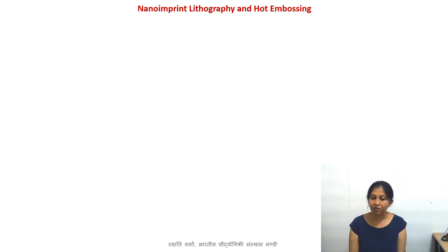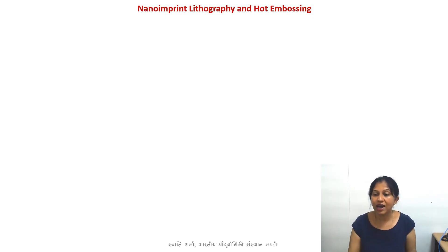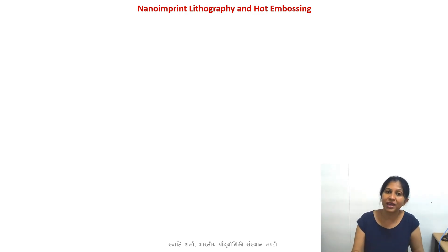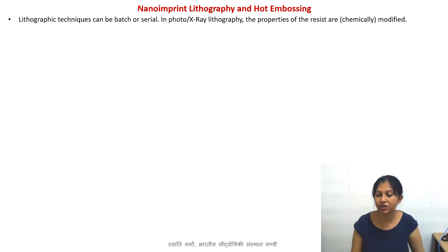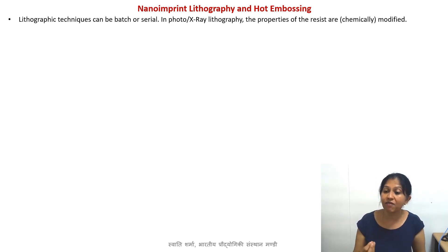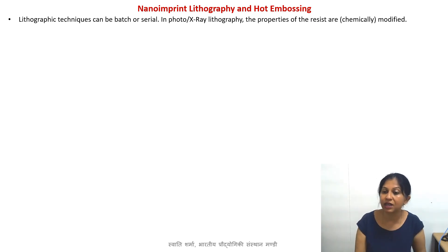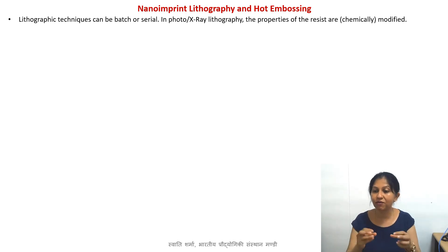In today's lecture we are going to discuss nano imprint lithography and one of its variants known as hot embossing. As the name suggests, it's a lithographic technique used for making structures at the nanoscale. We already know there is X-ray lithography for nanoscale structures, and photolithography which can be used as a batch fabrication technique. Serial lithographic fabrication includes electron beam lithography, while X-ray and photolithography are batch fabrication techniques.